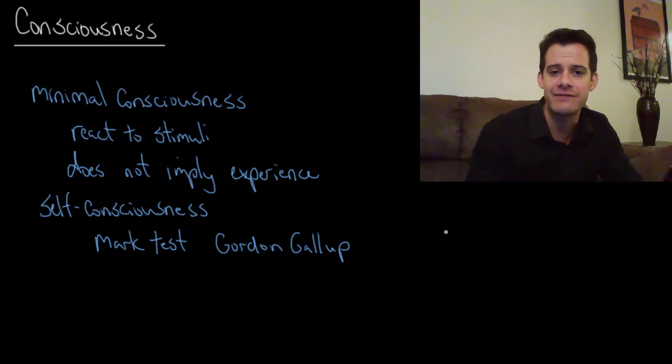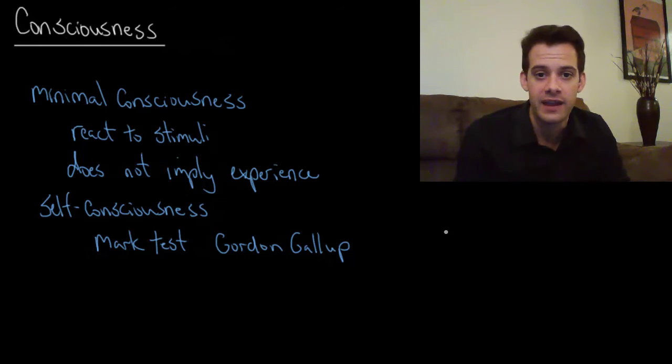And then what Gallup did is after he gave the chimps experience with mirrors he discreetly placed a spot of dye on a chimp's face. And then he gave the chimp the opportunity to interact with a mirror again. And what he wanted to know is will the chimp realize that that spot of dye is on his own face? And that would indicate that he knows that it's him in the mirror, not another chimp.